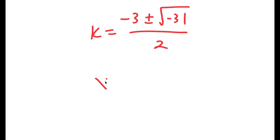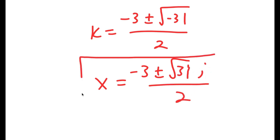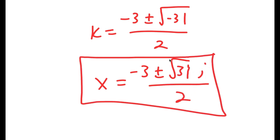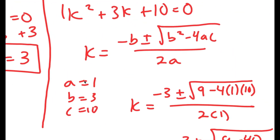I can rewrite this as negative 3 plus or minus the square root of 31 times i over 2, because i is equal to the square root of negative 1. So this gives two more solutions of k. So these are my three solutions.